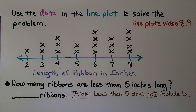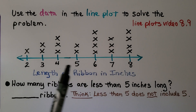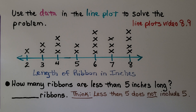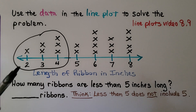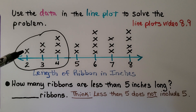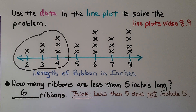Back in video 8.9, we learned about line plots. This is a line plot, and it's telling us to use the data in the line plot to solve the problem. It says 'length of ribbon in inches,' so each of these numbers are inches. It's asking us how many ribbons are less than 5 inches long. Less than 5 does not include 5, so we look at values below 5. Each X represents one ribbon. Counting them: 1, 2, 3, 4, 5, 6 — six ribbons are less than 5 inches long.